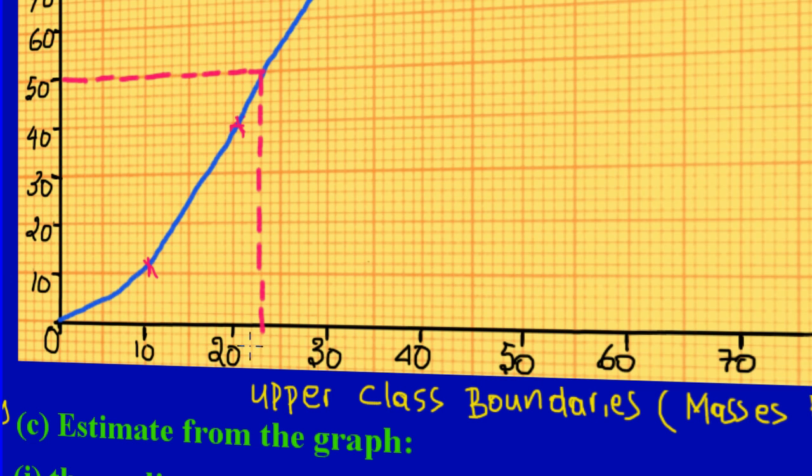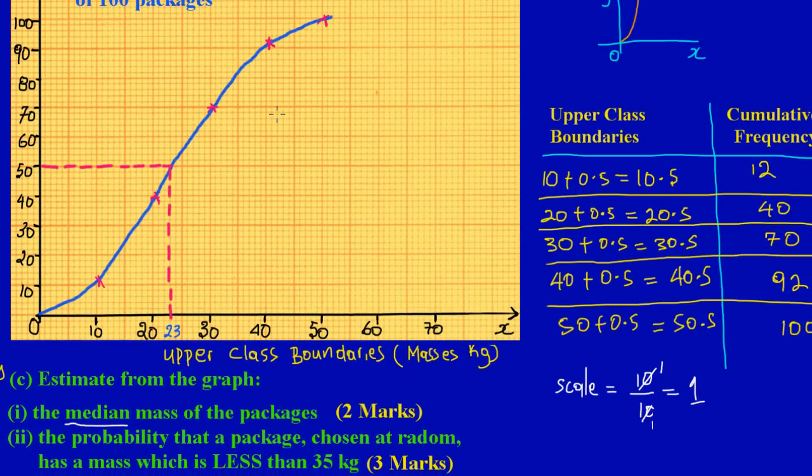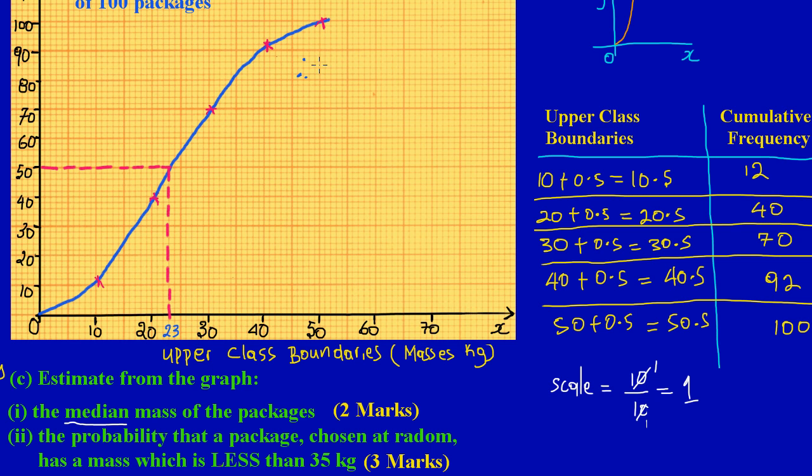I'm coming down right there on my x-axis. That value would represent my median. If you notice here, I have 20 here, so obviously this would be 21, 22, 23. So my median mark would be 23. Therefore, the median is equal to 23 kilograms. That's part C part 1.